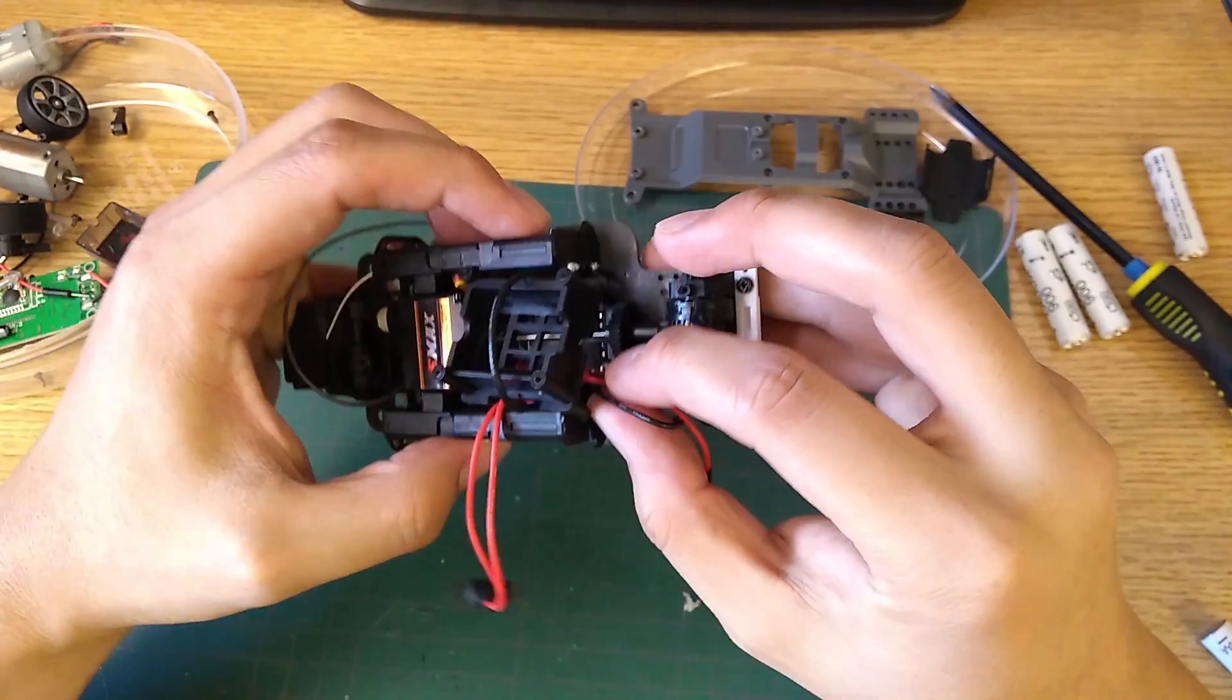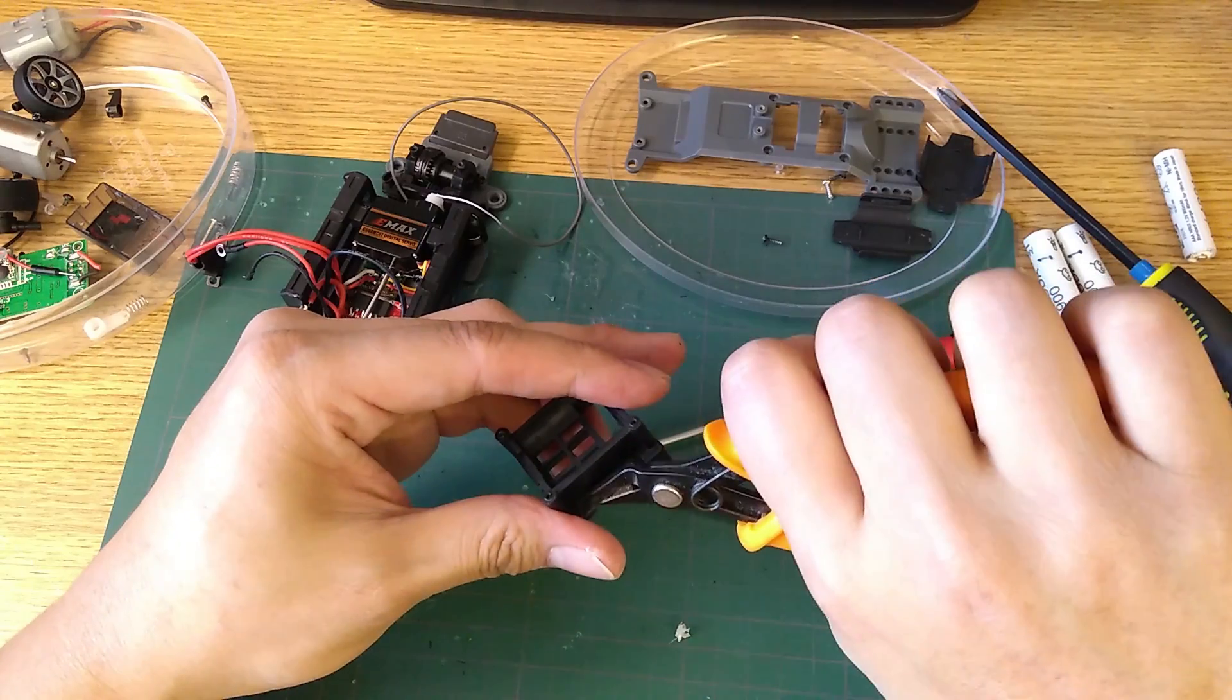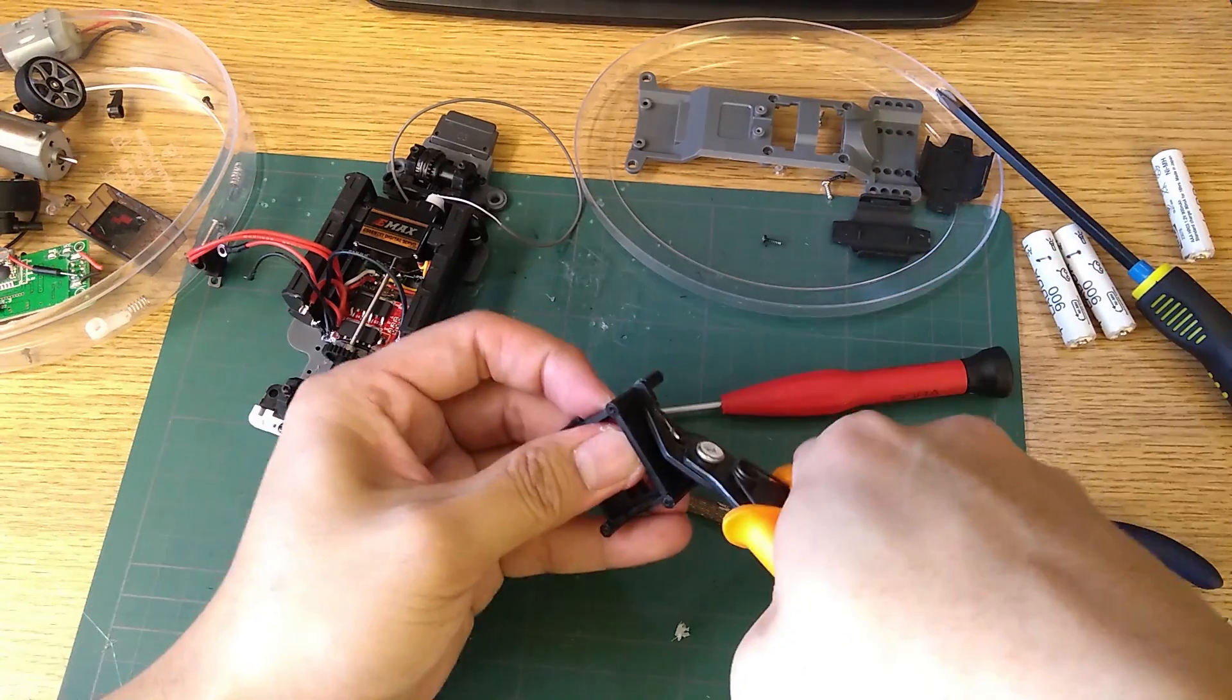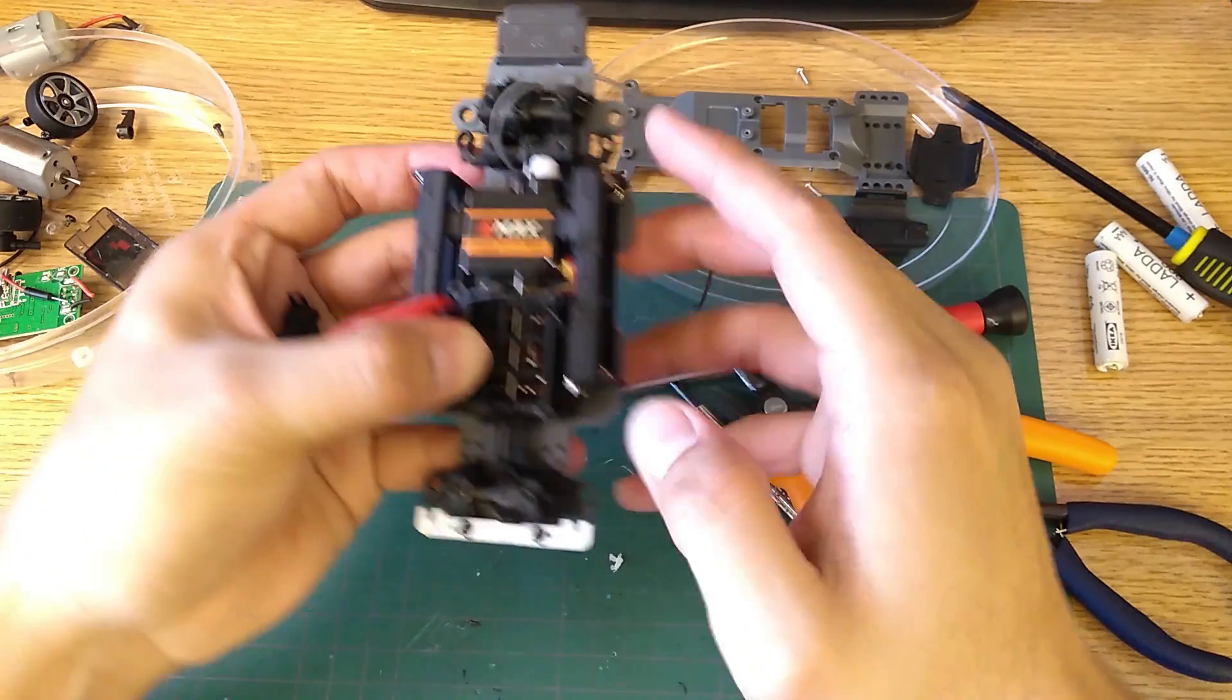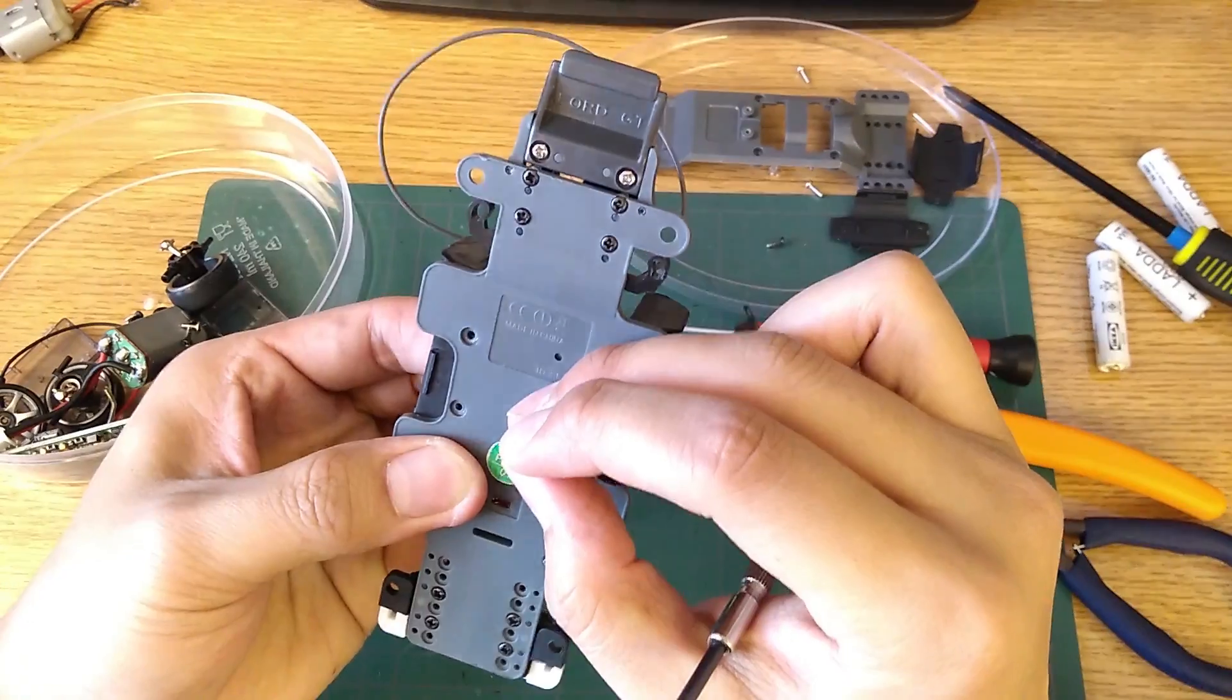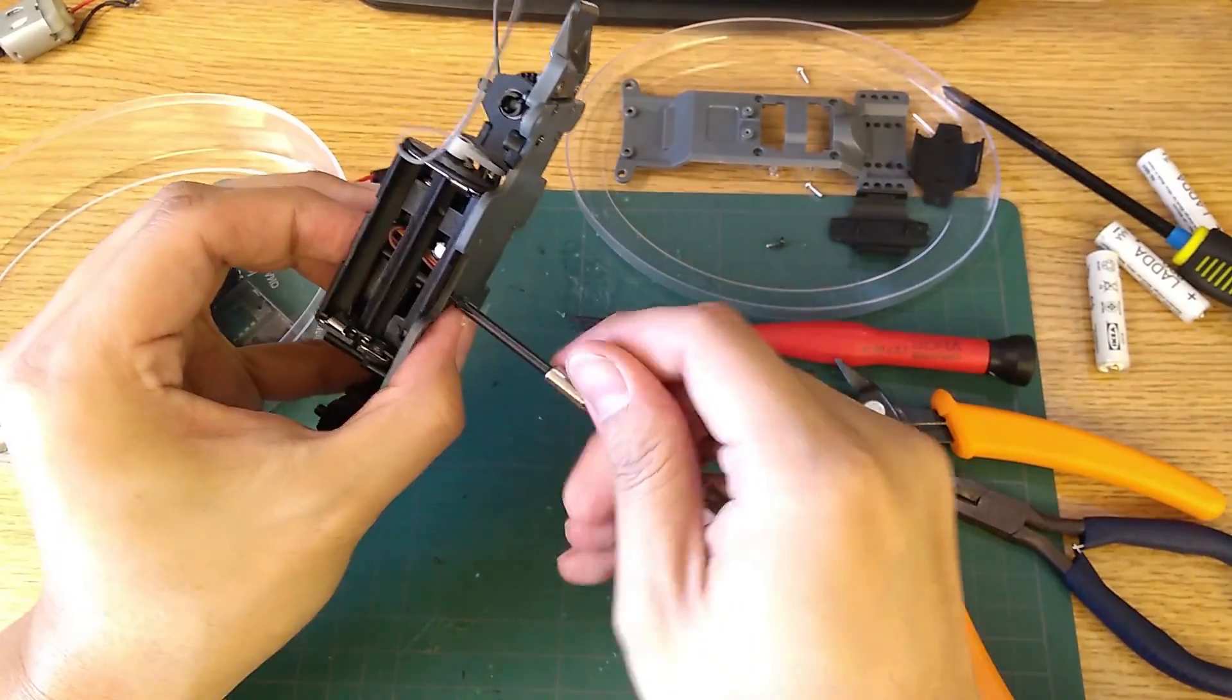Unfortunately the motor tray doesn't have enough room for wires so a bit of trimming is needed. Now that it fits snugly on to the chassis, screw everything down from the bottom and the car is almost finished.